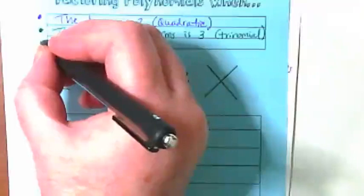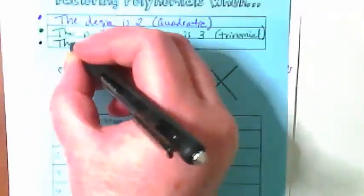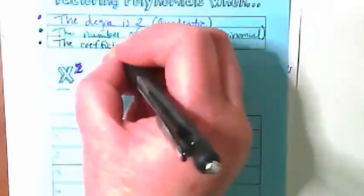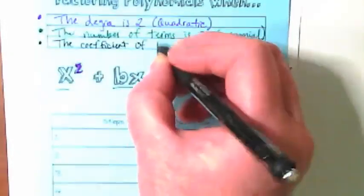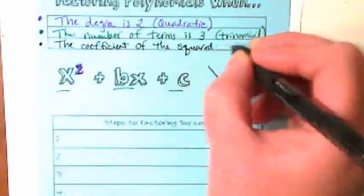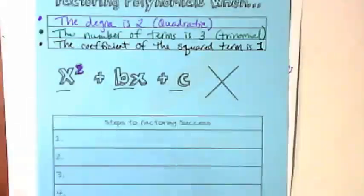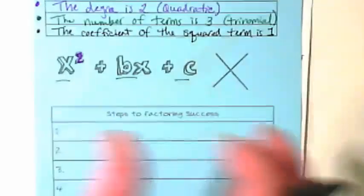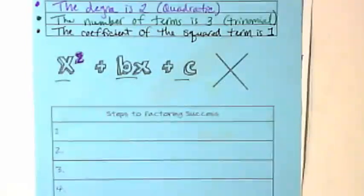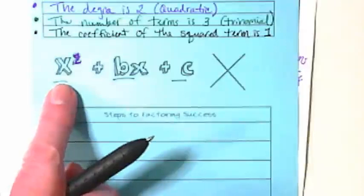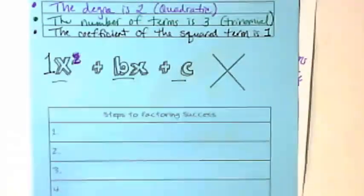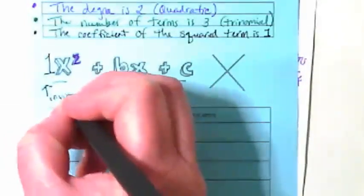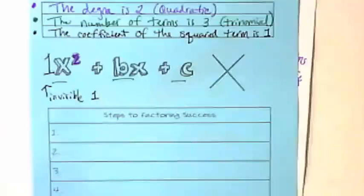And the final criteria to be able to use this set of steps is the coefficient—this is a really long explanation, but I'll show you what it means really quickly—the coefficient of the squared term is one. That means when we look at this leading term that's squared, there's nothing in front of it because it's an invisible one. Take a look at the worksheet that got passed out to you. I chose it specifically for today because it had nothing in front of that leading term.